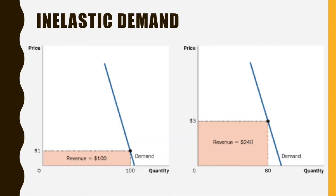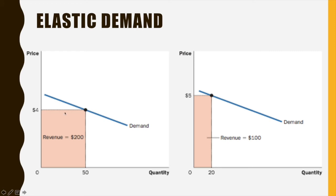With inelastic demand: at a price of $1, 100 units are sold, giving revenue of $100. If we raise the price to $3, we sell only 80 units — losing 20 units — but total revenue actually goes up to $240. With elastic demand, at a price of $4, we sell 50 units for total revenue of $200. If we raise the price from $4 to $5, quantity demanded falls from 50 to 20, and revenue falls to $100.